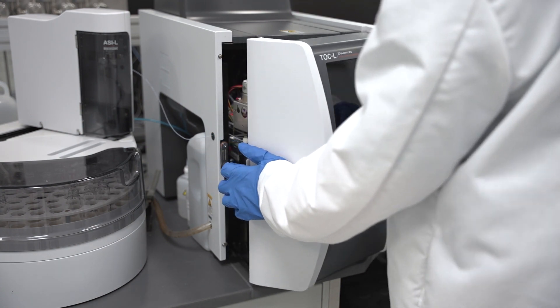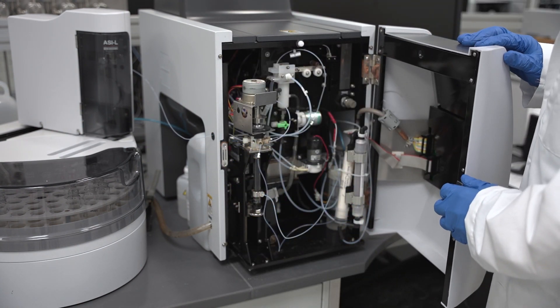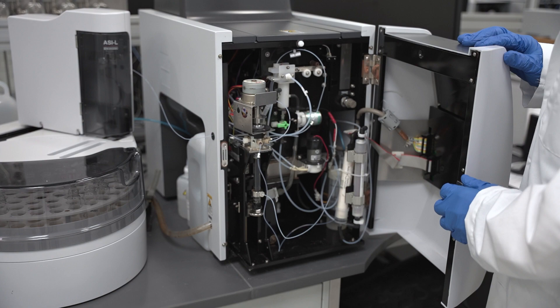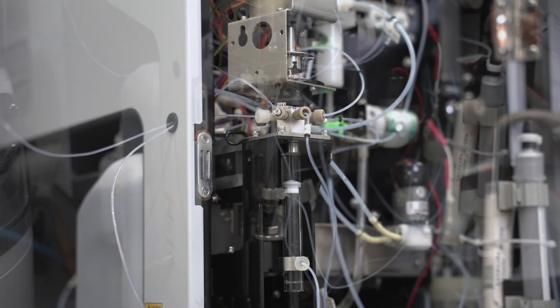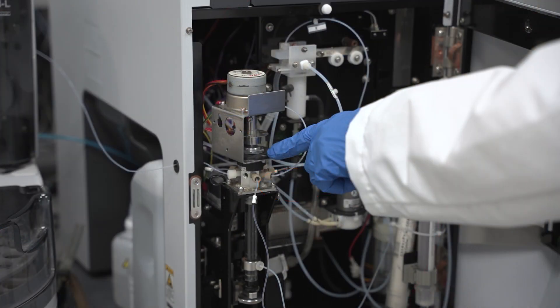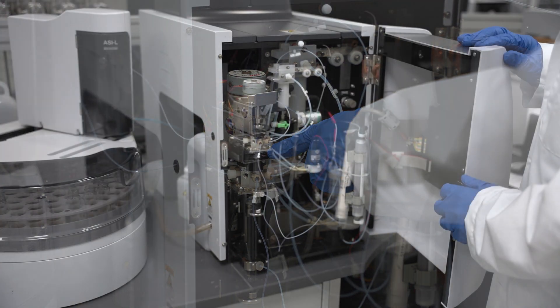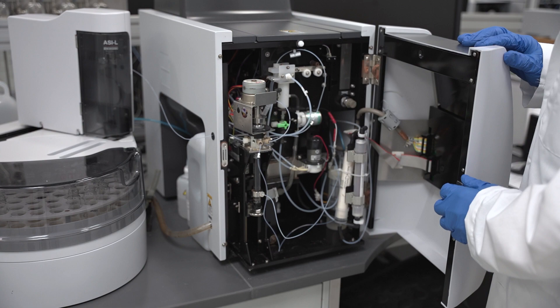Part of the routine maintenance on the TOC-L involves replacing the syringe plunger tip and 8-port valve rotor. The plunger tip is the white Teflon part located here in the syringe and the rotor is inside the valve above the syringe. These parts play a crucial role in sampling and delivering precise injection volumes to the instrument for measurement and need to be replaced periodically to keep the instrument working properly. The frequency at which these are replaced will depend on the sample matrix and the frequency at which the instrument is used.